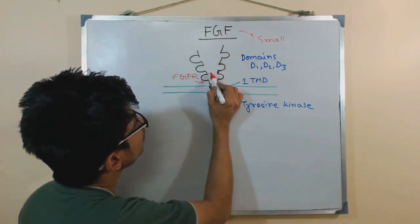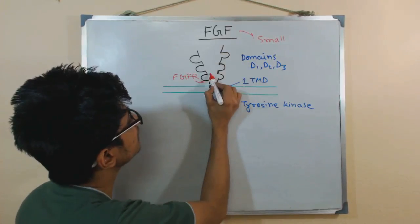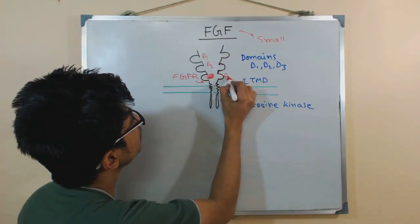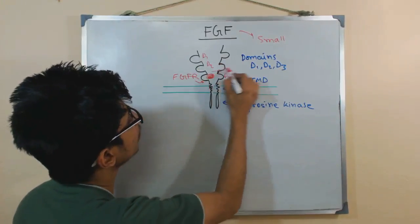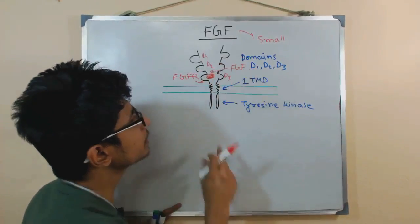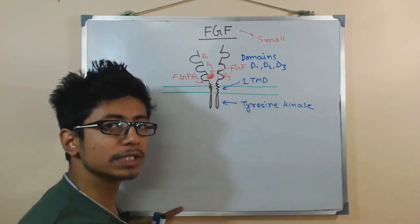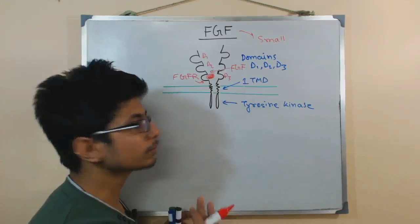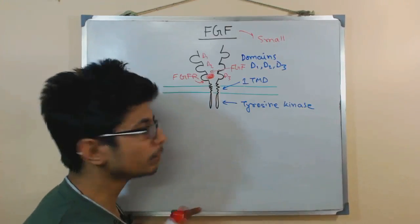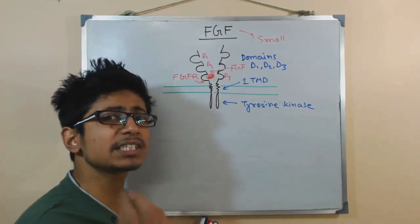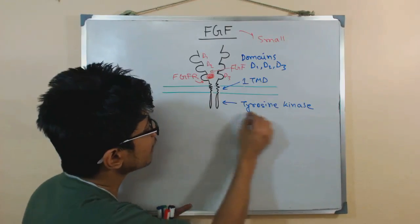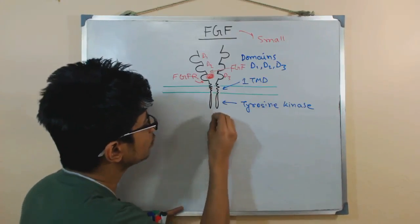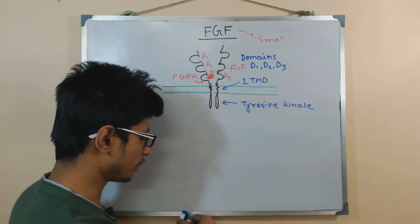Once we have the fibroblast growth factor molecule, it binds with the D3 domain of the fibroblast growth factor receptor. The fibroblast growth factor or FGF binds with the D3 domain of FGFR. Upon binding, it triggers a change inside and the tyrosine kinase domain of the intracellular portion of the FGF receptor starts to be self-phosphorylated.